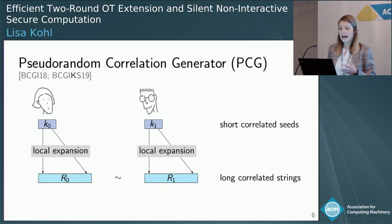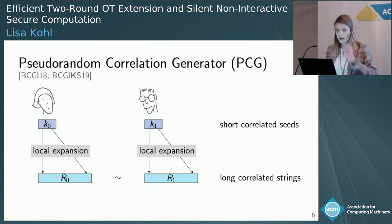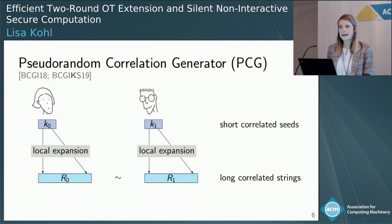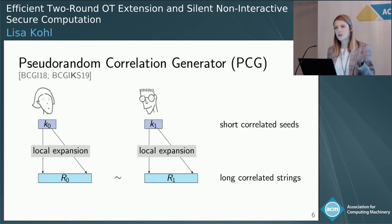I want to explain how our construction works and how we get this two-round OT. Similar to our previous work and also previous work of some of the other authors, it's based on so-called pseudorandom correlation generators, a primitive that allows two parties, Alice and Bob, to locally extend — without any communication — short correlated seeds into long correlated strings. This is the generalization from pseudorandom functions to the setting of secure computation.